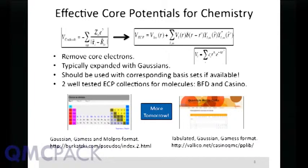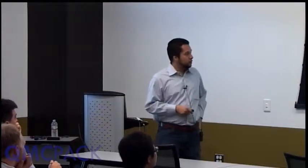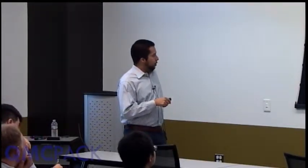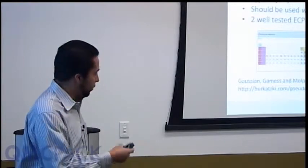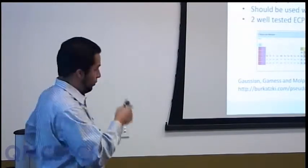An effective core potential has a local piece and a non-local piece defined through spherical harmonic projections on the wave function. Both are radial functions. In the chemistry community the form of these potentials is just an expansion in Gaussians, with powers of r in between. The way this works is people develop these pseudopotentials and give tables of coefficients that you can use to generate the potentials. Generating them yourself is very complicated unless you're an expert, so you go to well-known libraries and grab both the potential and the basis set that accompanies it.